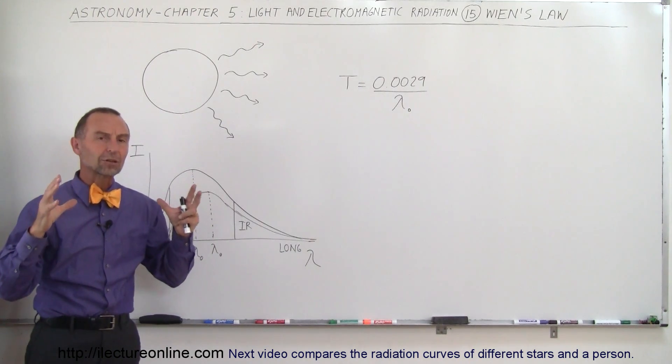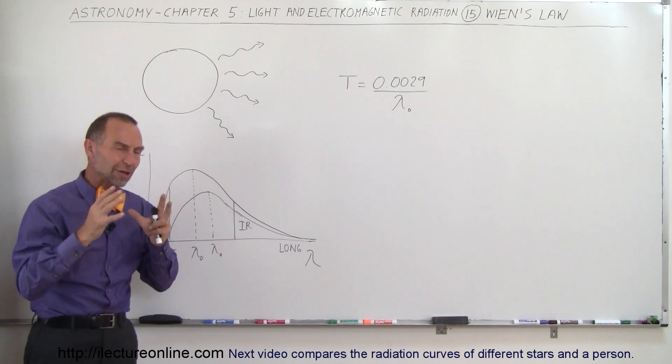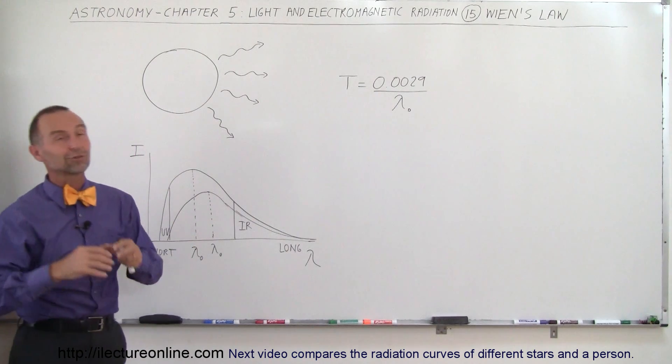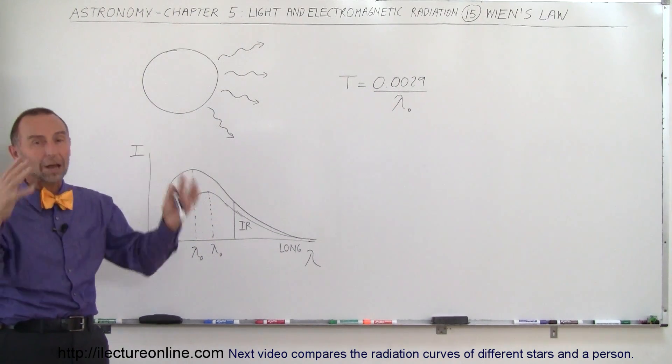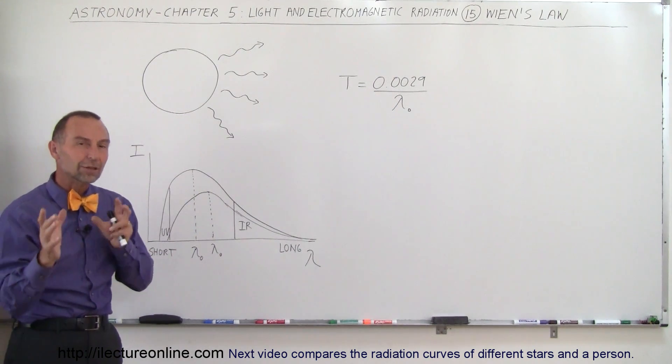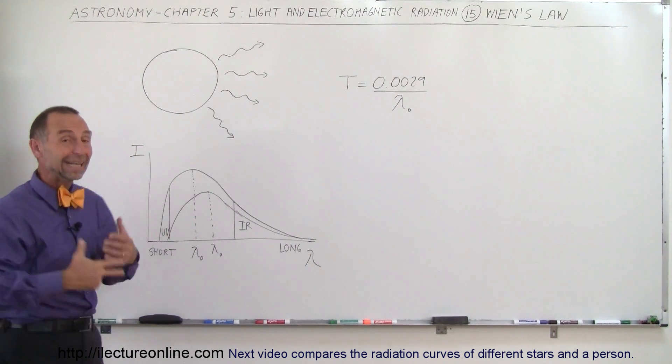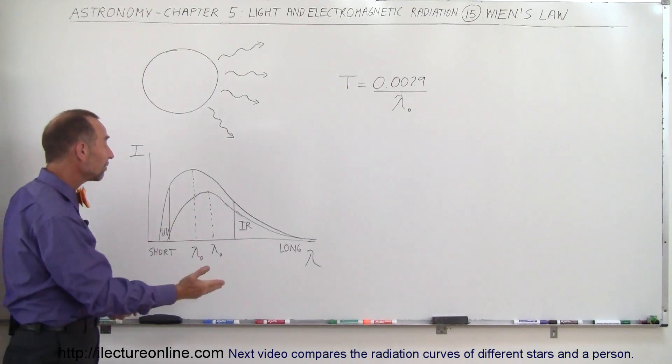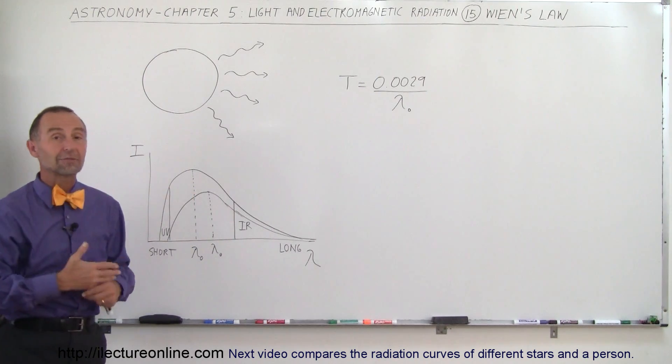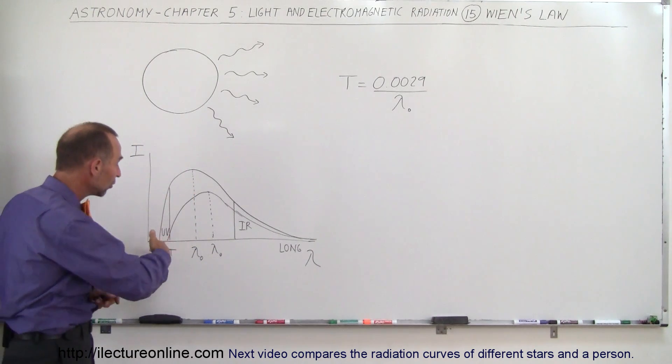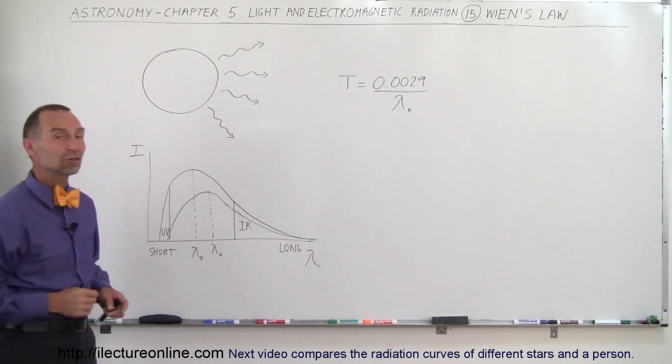Since all atoms in an object don't all vibrate at the same frequency, some vibrate a little bit faster, some a little bit slower, even though the whole object is pretty well at the same temperature. There's variation in how fast atoms vibrate in stars, in any object. So therefore some give off higher frequency radiation, some give off lower frequency radiation, and this is what we call the distribution curve of the radiation.